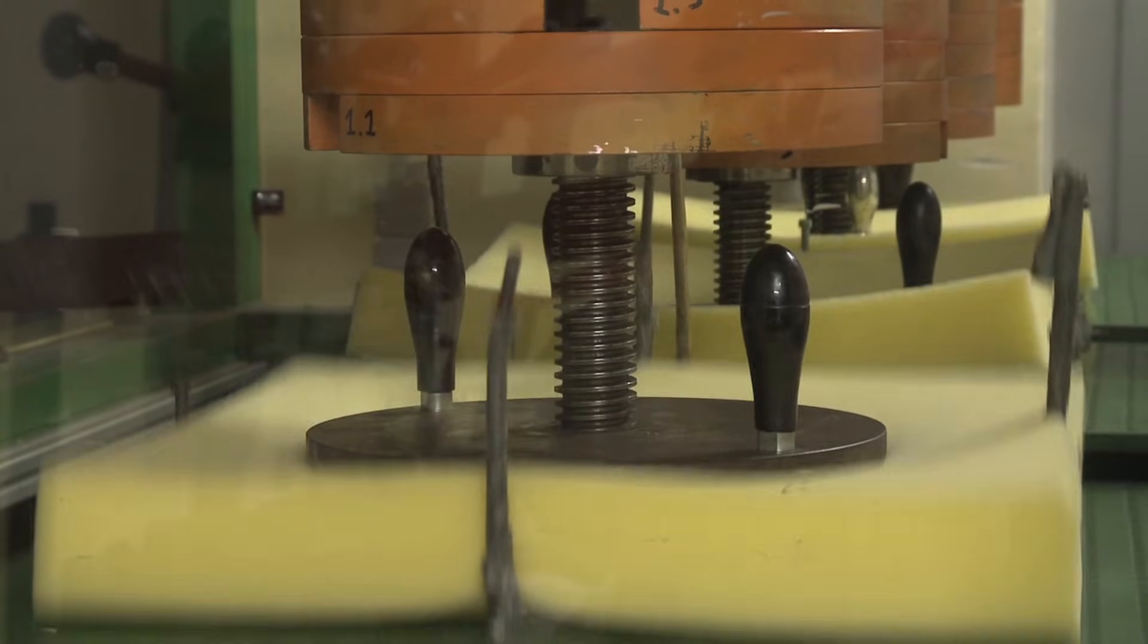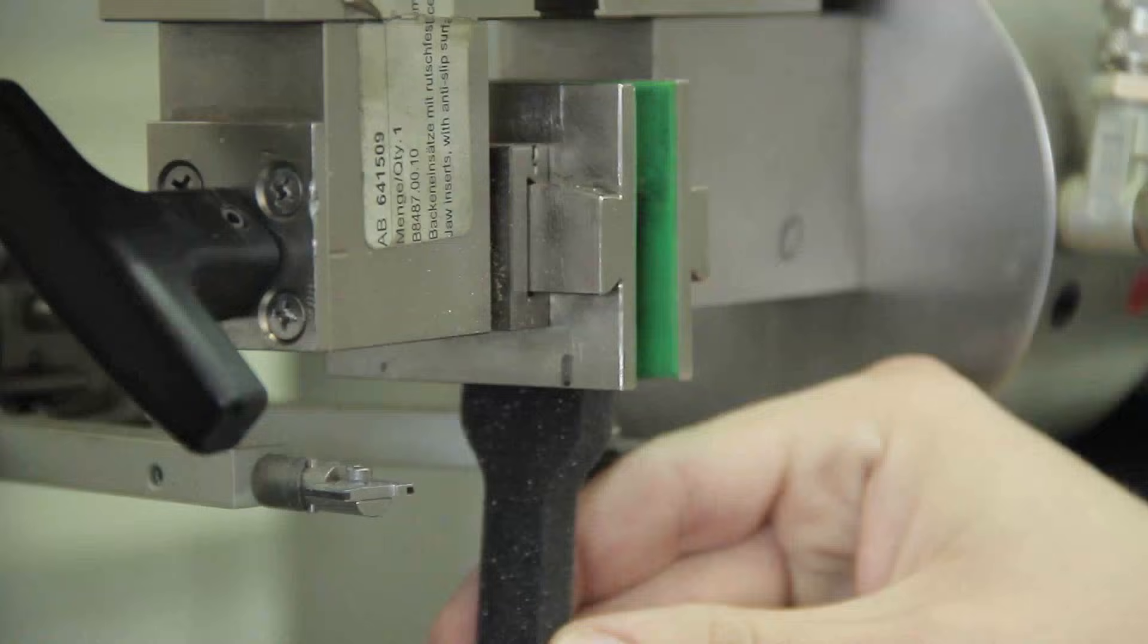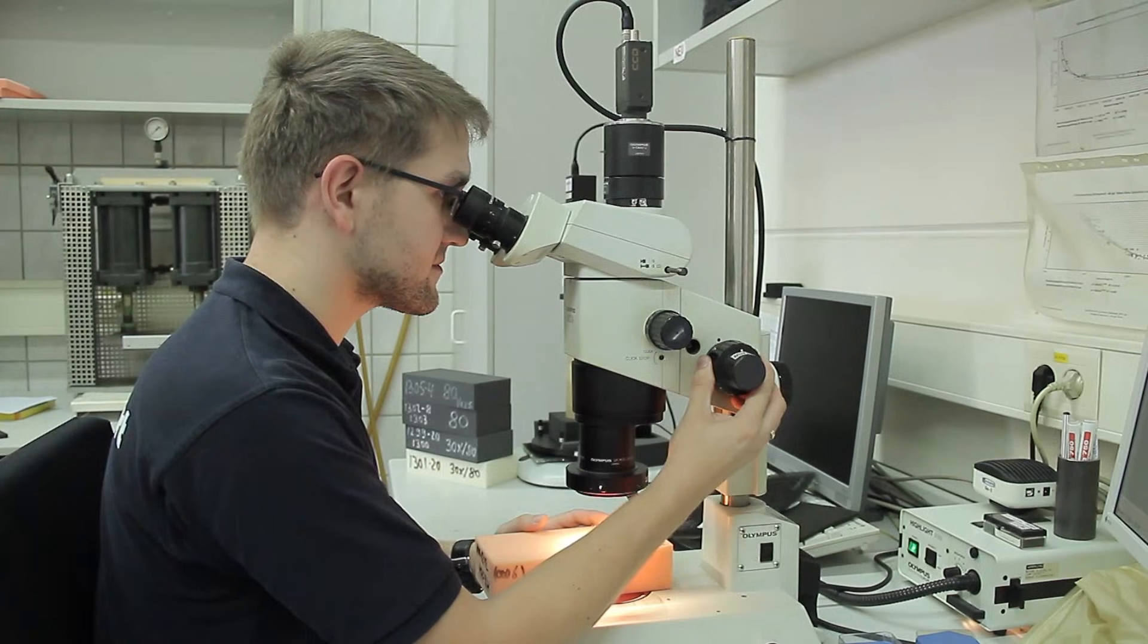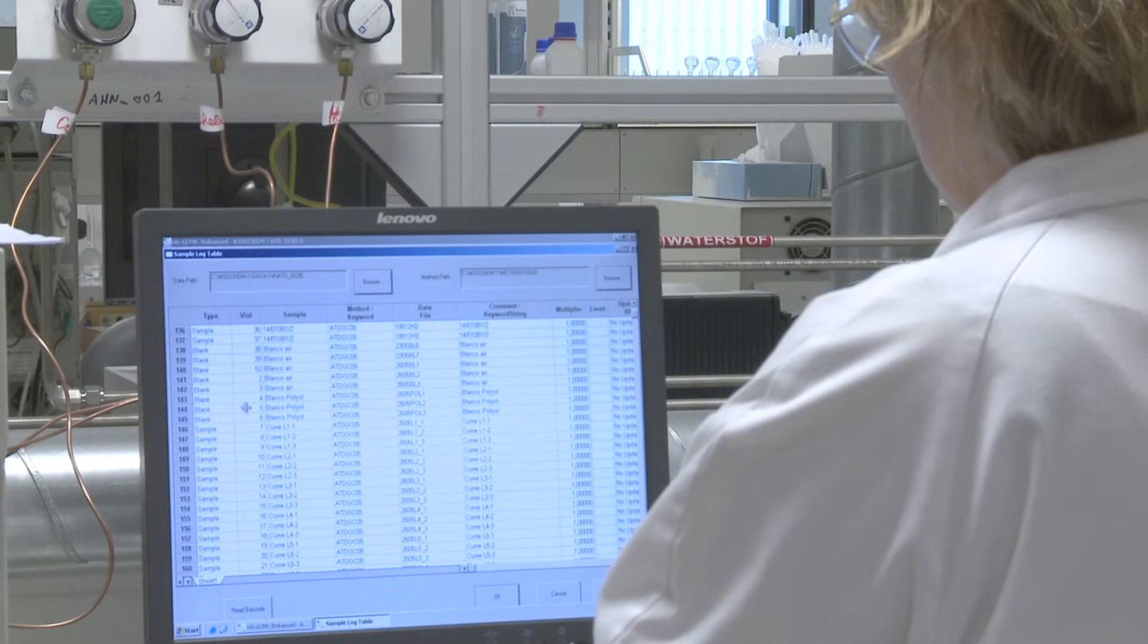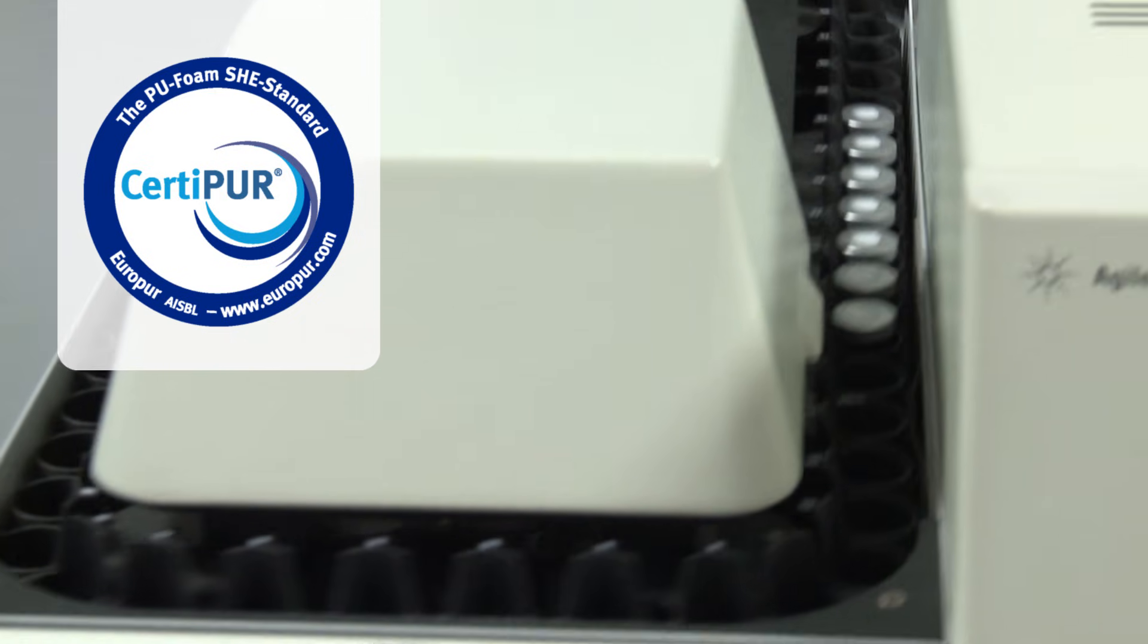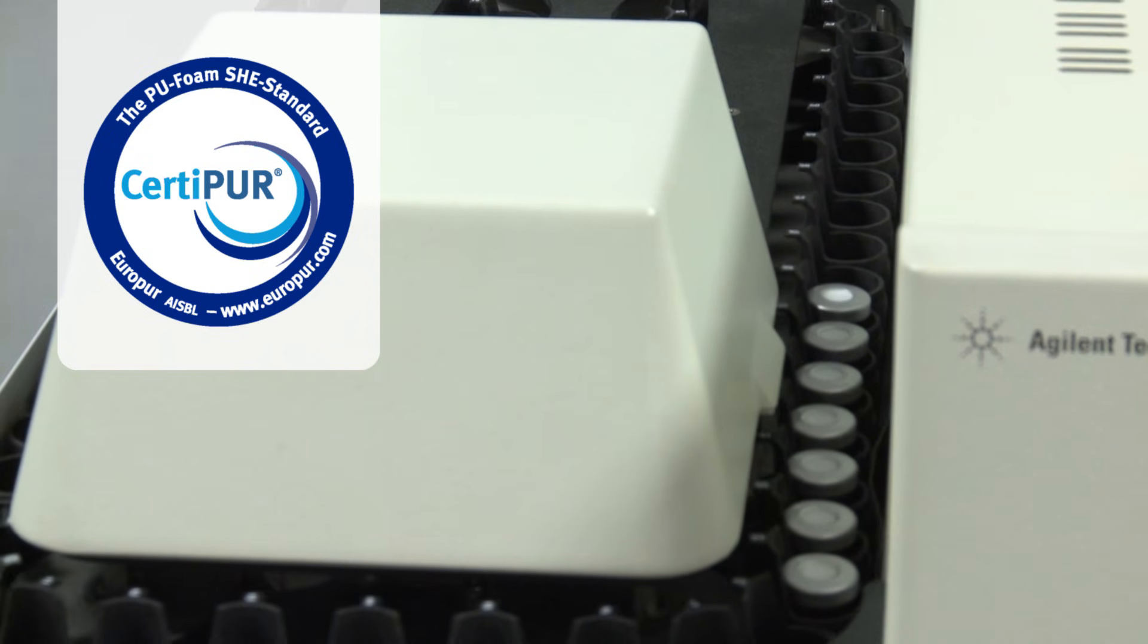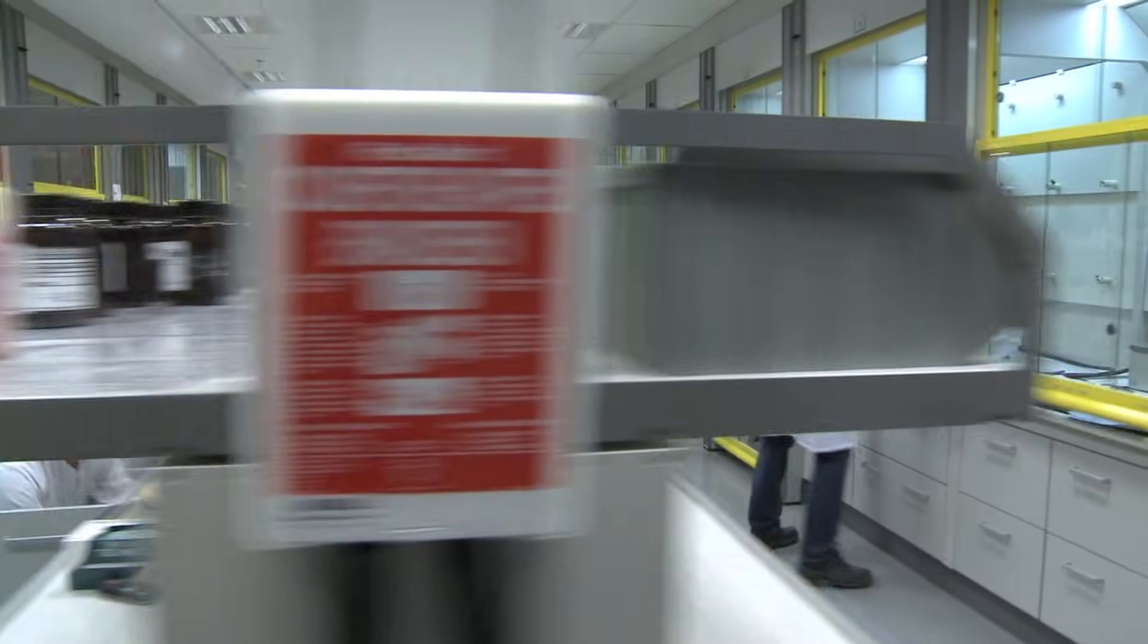All through the production process, foam is tested for its conformity to requirements. It is important to know that a large number of foams produced for use in bedding and upholstered furniture are certified under CertiPUR. This is a voluntary testing, analysis and certification programme for the environment, health and safety properties created by the European PU foam industry.